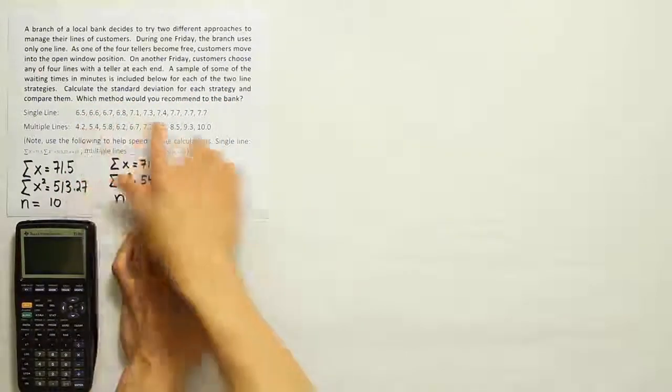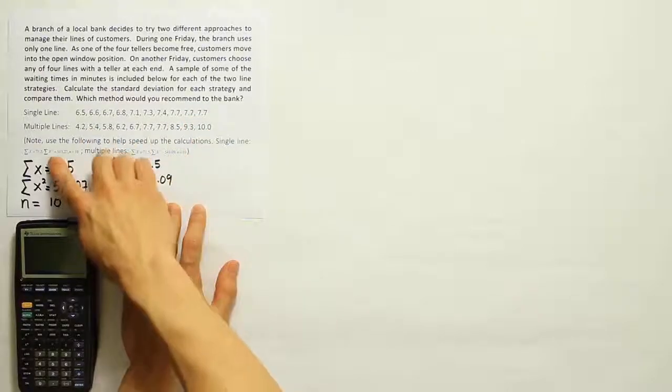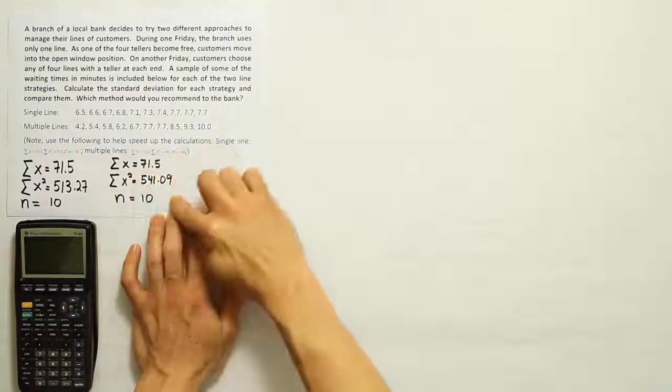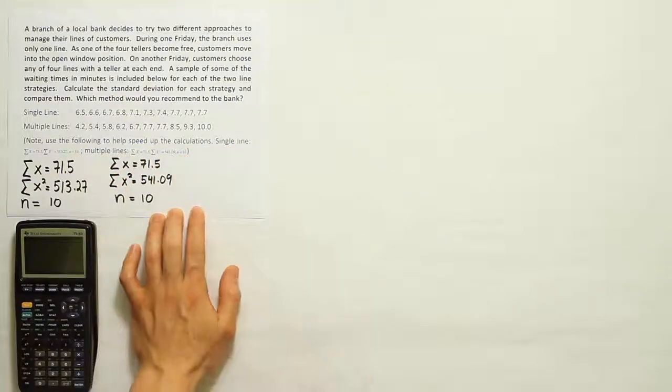Okay, so we have the raw data here, single line, multiple lines, and then they've given us some summary of data here to help us do the calculations. I've gone ahead and wrote it again so that it would be nice and bold and we could see it on the screen.